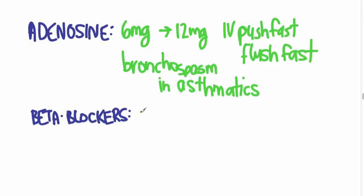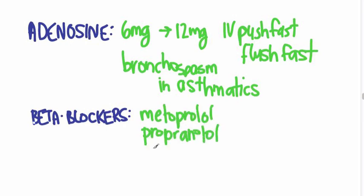So there are many beta blockers available to you: metoprolol, propranolol, esmolol, and labetalol, though this last one is usually used more to control blood pressure than it is to control heart rate. Pick one and learn that one. The one that I tend to use is metoprolol, 5 milligrams.